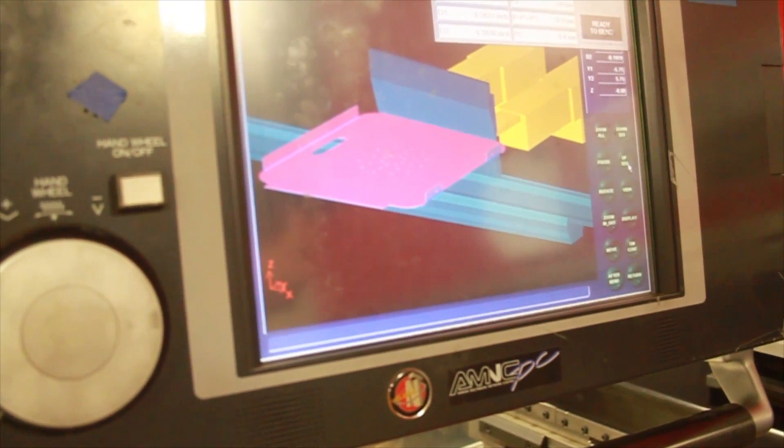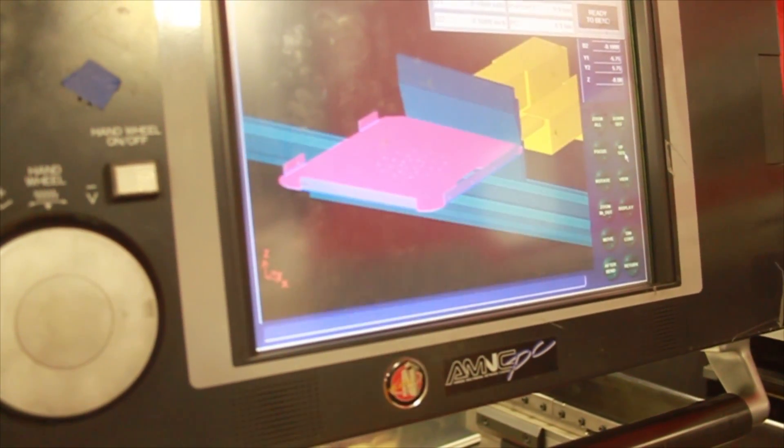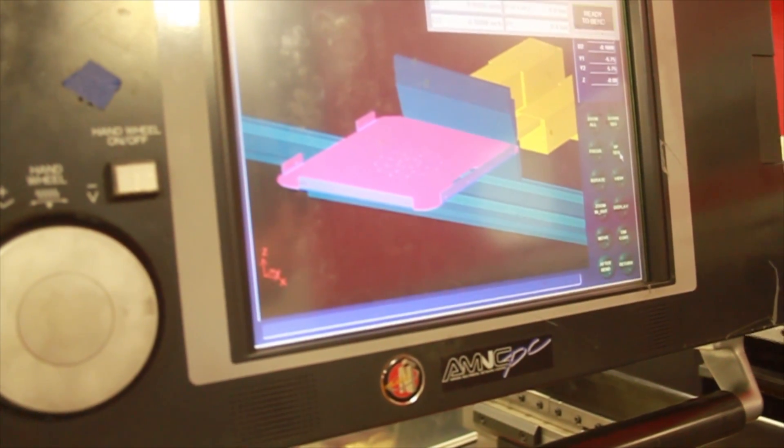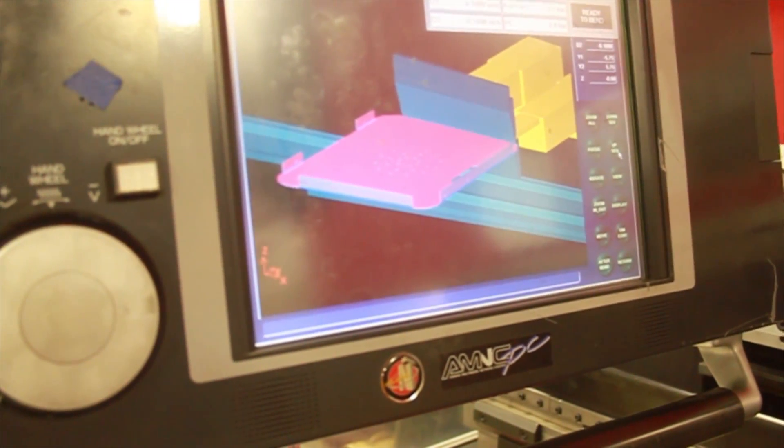The next step in the process is bending the metal sheets into shape. The same program that was created for the laser is now used to bend the pieces accurately.